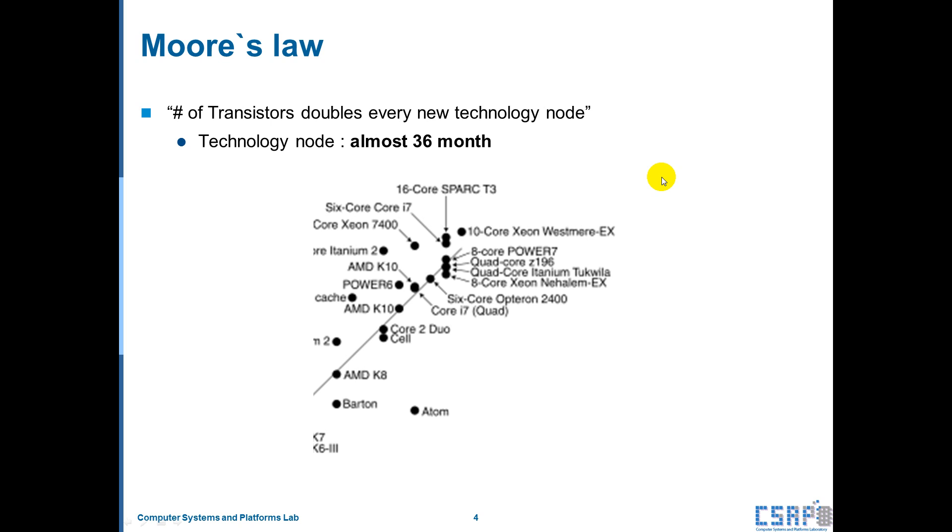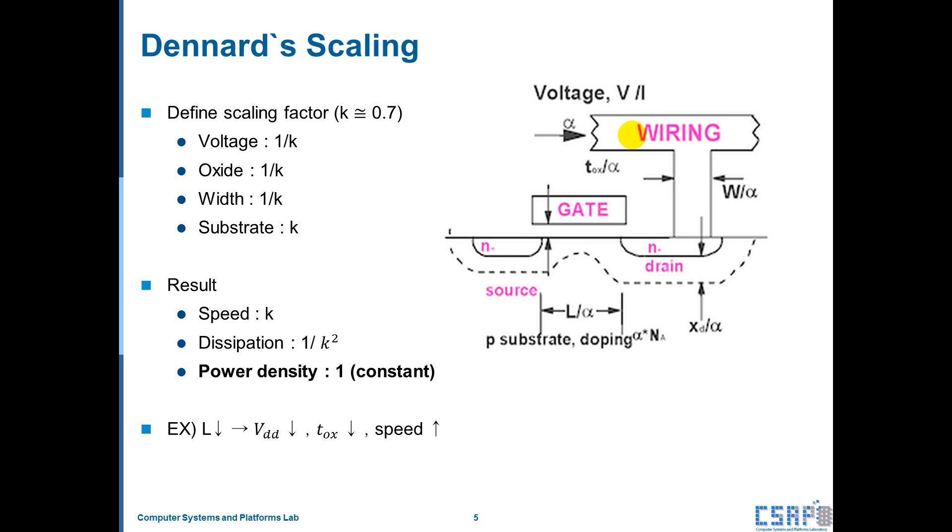In this graph, you can see that almost every processor stuck in 10 billion transistors. And Intel redefines the technology node as 36 months. Why is this happening? I will talk about this later.